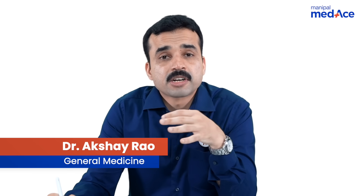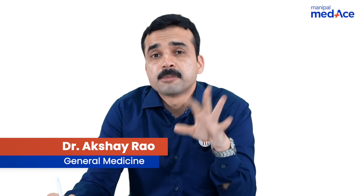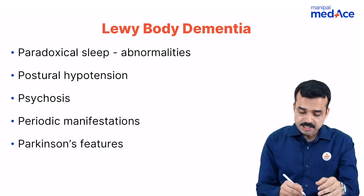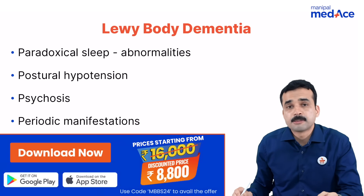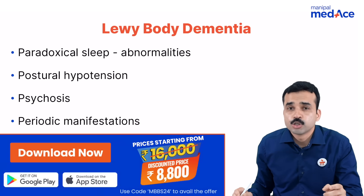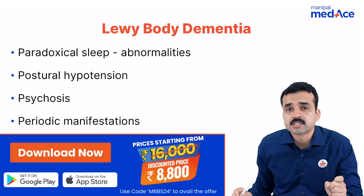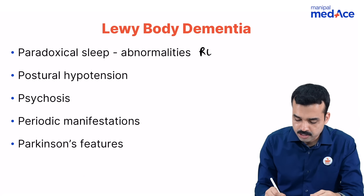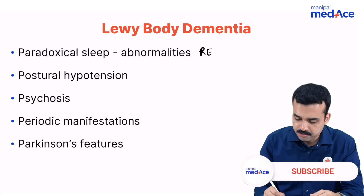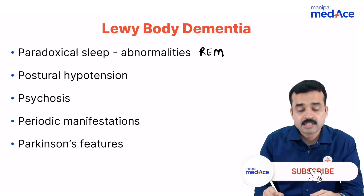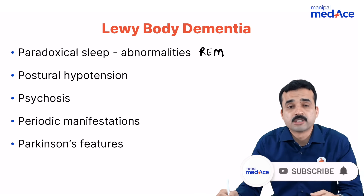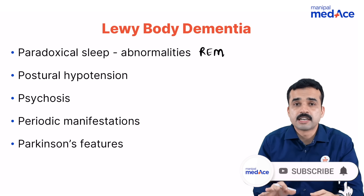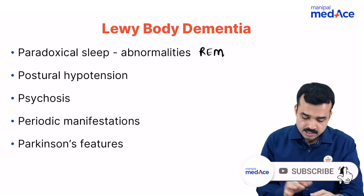Students, you can remember the important aspects of Lewy body dementia using the five P's. The first P is paradoxical sleep abnormalities. Paradoxical sleep is REM sleep, so REM sleep behavioral disorders such as somnambulism occur early in Lewy body dementia.